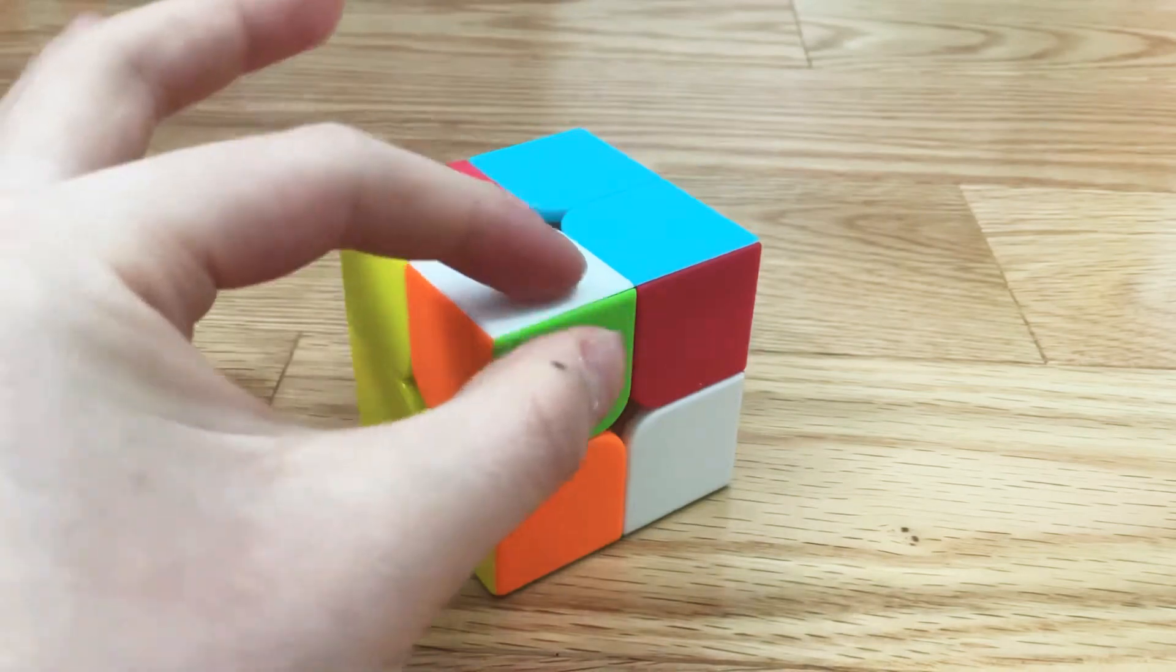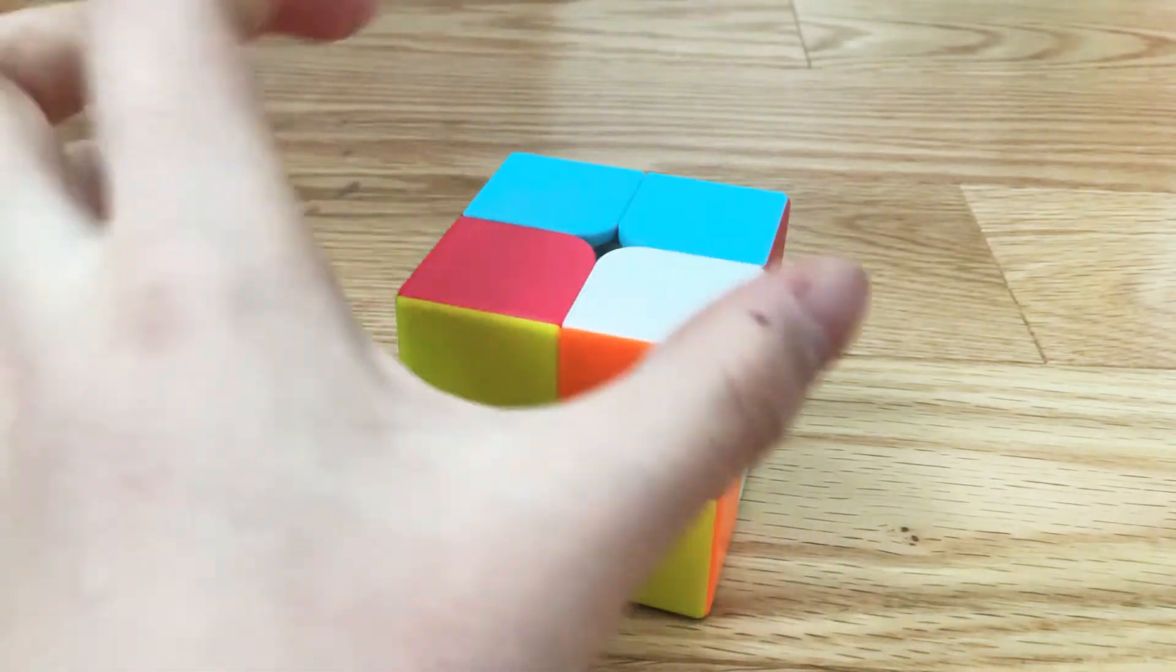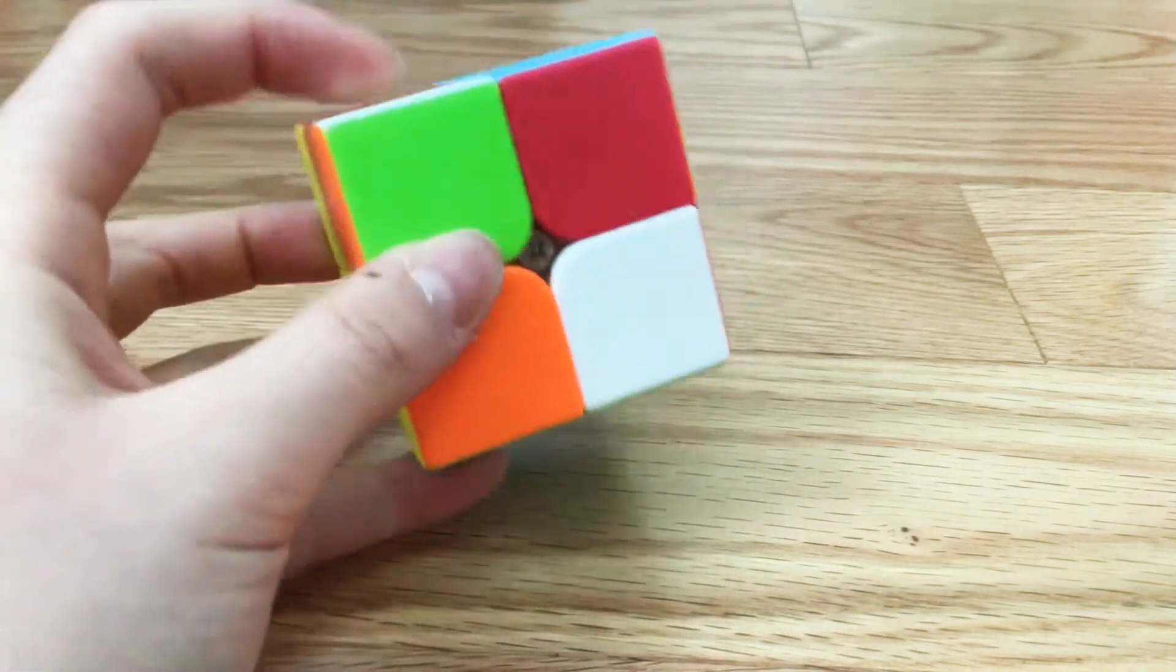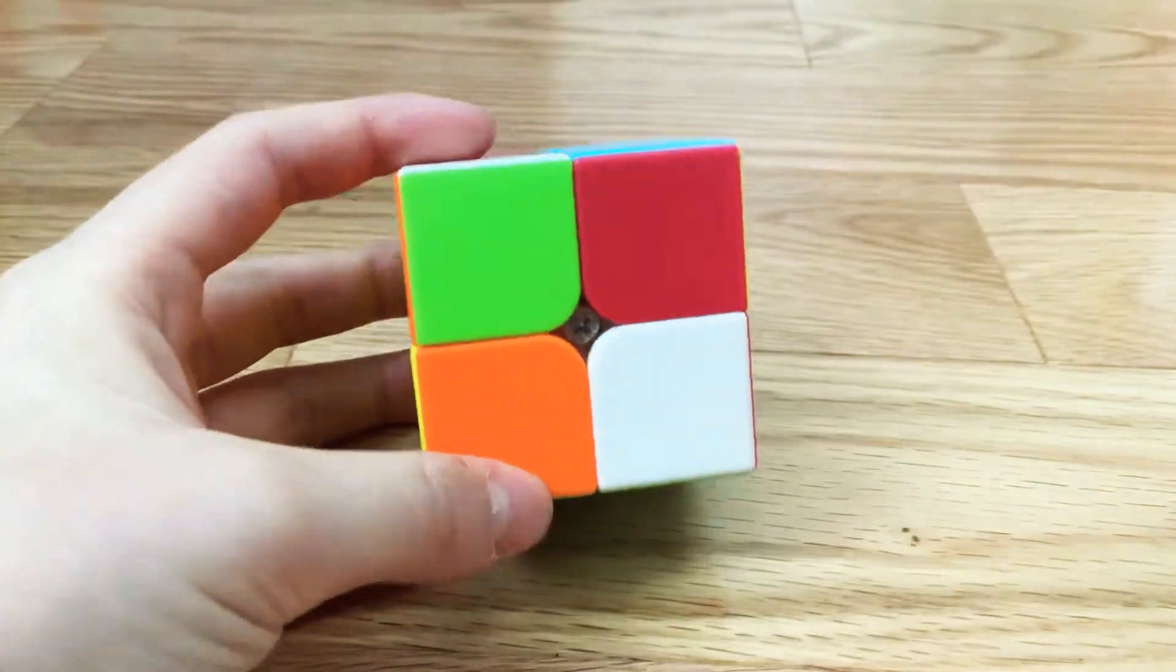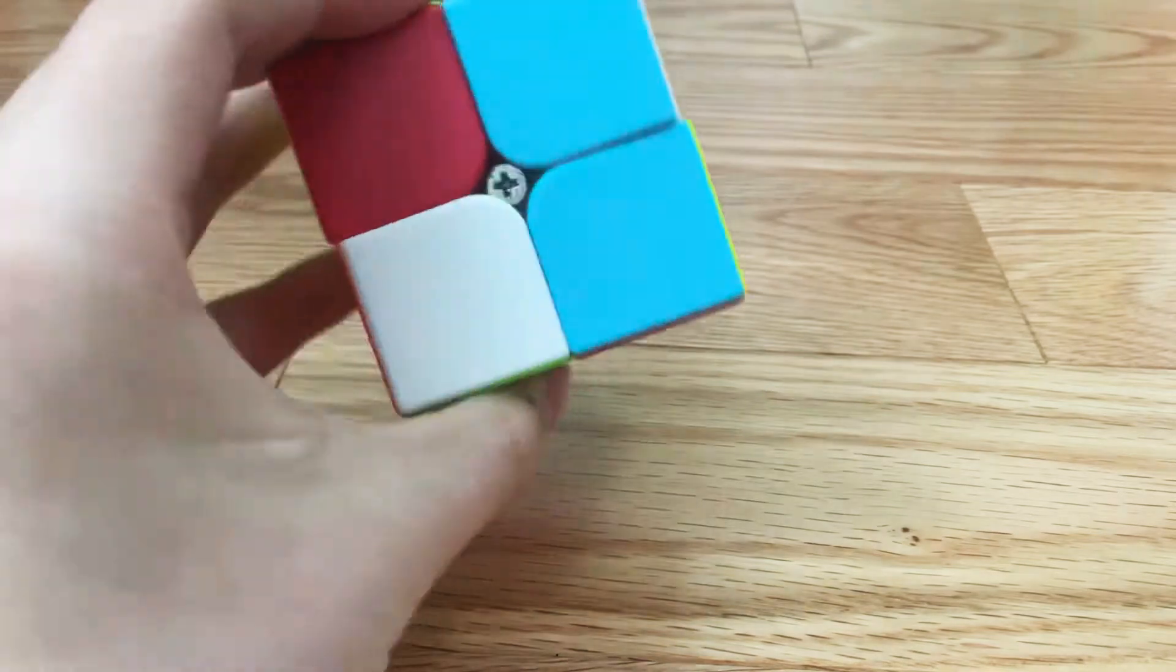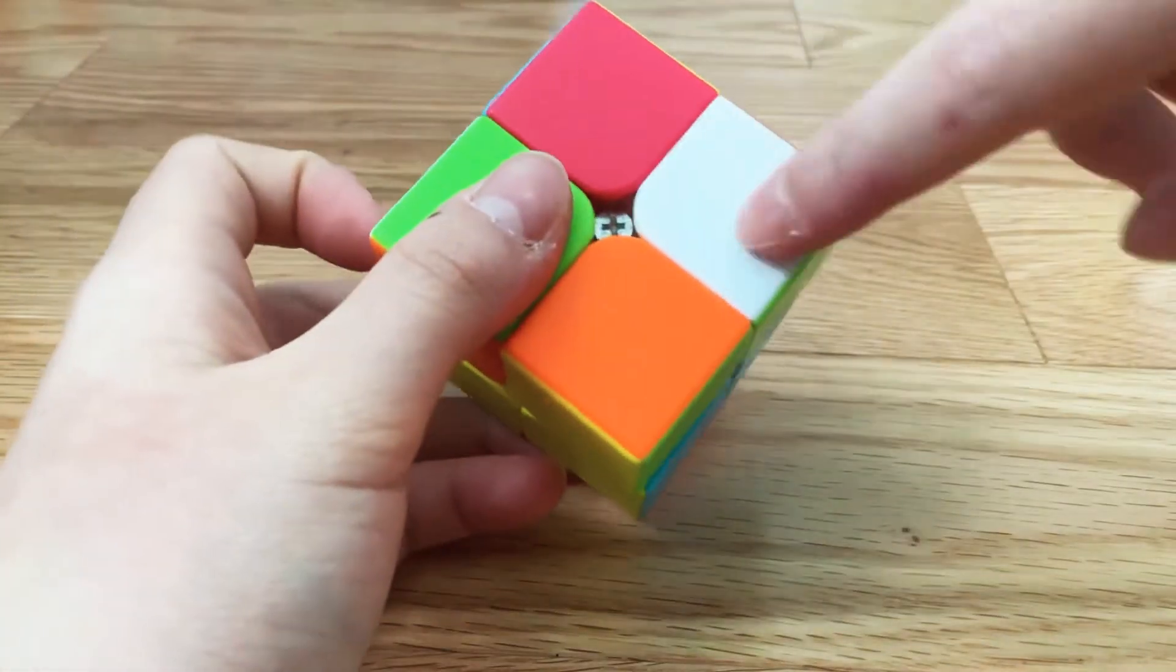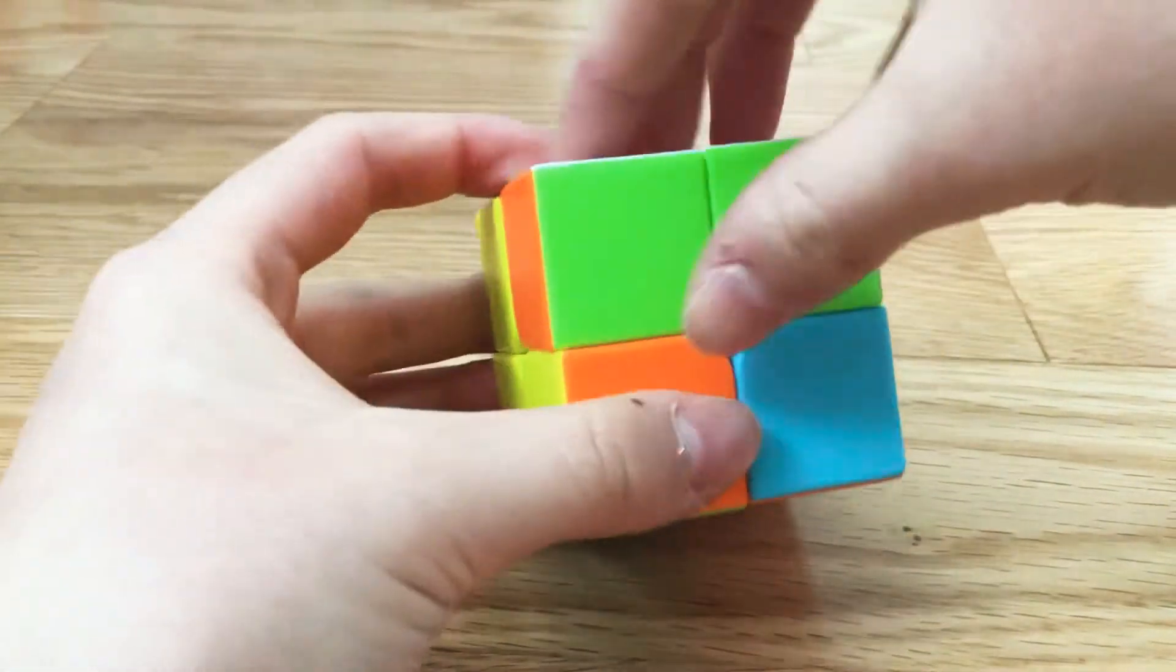So the white is on top and you see this corner I picked is white, green, and orange. I usually like to hold it like this, so this face is facing you. Now find another one with white and green, so this one appears to be right here. Just turn it on top.